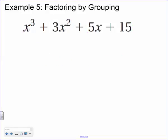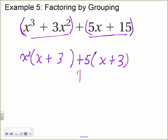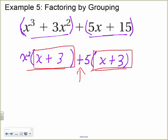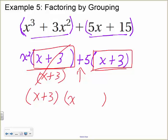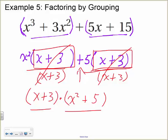This is still not fully factored because there's a plus sign connecting the front and the back. But notice the front has an (x + 3) factor and the back also has an (x + 3) factor. So we factor out the entire (x + 3) binomial. Dividing (x + 3) out of x²(x + 3) leaves x², and dividing it out of 5(x + 3) leaves 5. Now we have a multiplication connecting them: (x + 3)(x² + 5). Now it's fully factored.